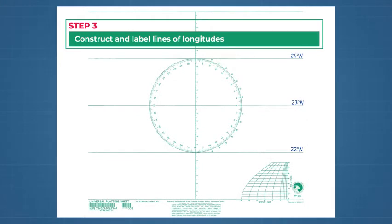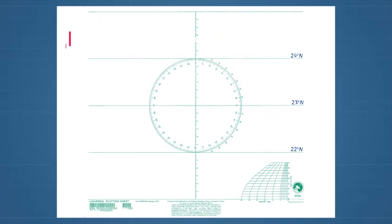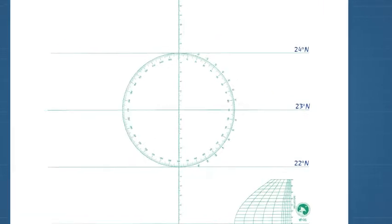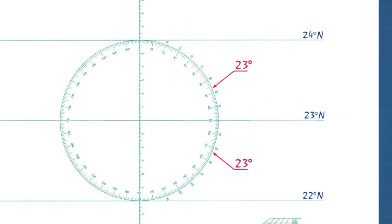Step 3: Construct and label lines of longitudes. To establish lines of longitudes with correct spacing, note the numeric value of the middle latitude, in this case 23 degrees, on the outer scale of the graduated circle above and below the middle latitude line. Draw a vertical line through these points. Repeat the process on the opposite side of the plotting sheet.